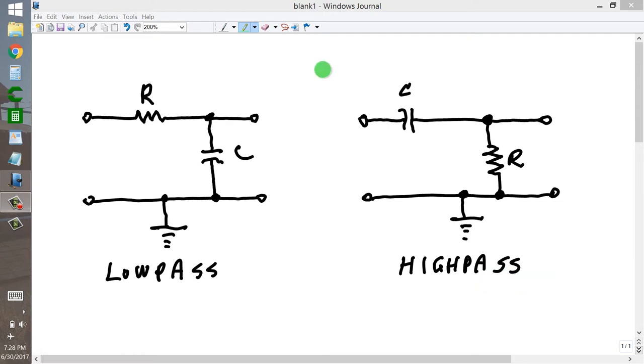The response curves look something like this if you graph frequency on a horizontal axis and amplitude on the vertical axis. A low-pass response looks something like this, and a high-pass response looks something like that.